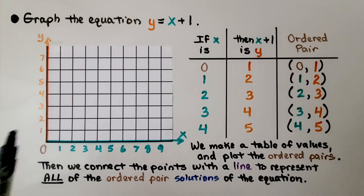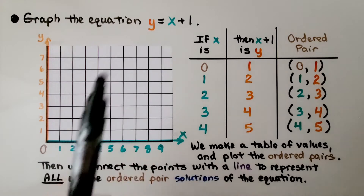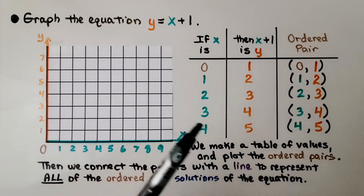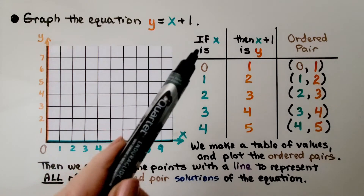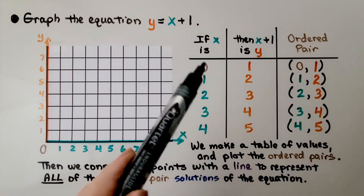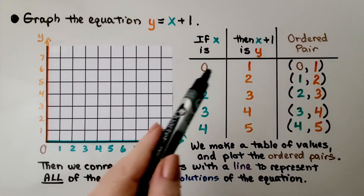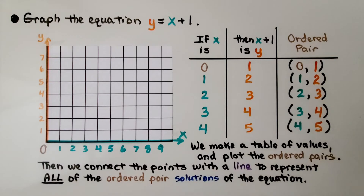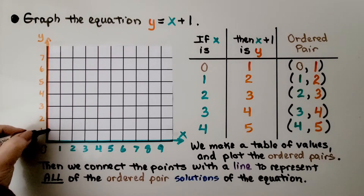We're going to graph the equation y equals x plus 1. We start by making a table of values. We have x plus 1, so if x is 0, then x plus 1 would be 1. We have an ordered pair of 0 for x and 1 for y. On the graph, 0 for x is right here and 1 for y is right here.